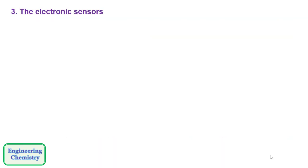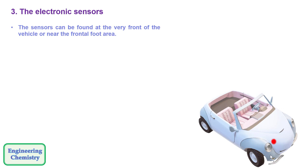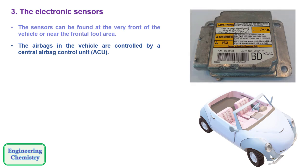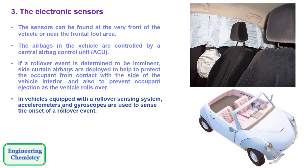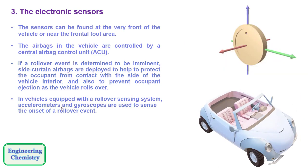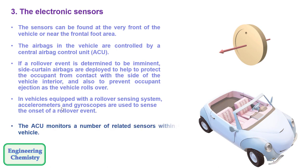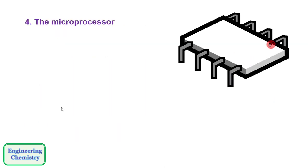The third part is electronic sensors, which can be found at the very front of the vehicle or near the frontal foot area. The airbags are controlled by a central airbag control unit. If a rollover event is determined to be imminent, side curtain airbags are deployed to protect the occupant from contact with the side of the vehicle interior and to prevent occupant ejection as the vehicle rolls over. In vehicles equipped with a rollover sensing system, accelerometers and gyroscopes are used to sense the onset of a rollover event. The ACU monitors a number of related sensors within the vehicle.